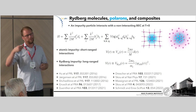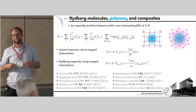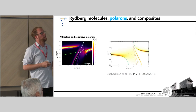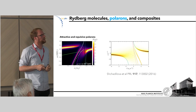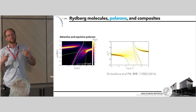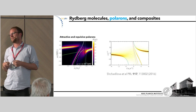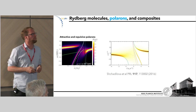If we consider instead a Rydberg impurity, a lot of the physics looks similar — we again have an interaction depending on the scattering length, but now it's the electron-atom scattering length, and depends on the electron mass. Crucially, instead of a delta function, it depends on the long-range Rydberg wave function. What I'm showing here is the absorption spectrum of a Rydberg impurity in an ideal BEC as a function of the potential depth, which is not directly tunable experimentally but is useful theoretically — and you can tune it by changing the principal quantum number.